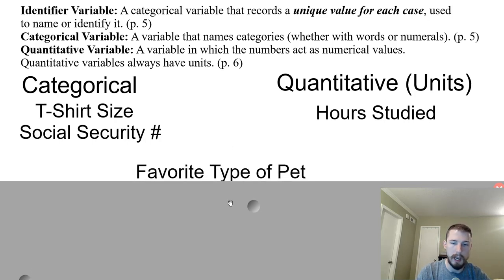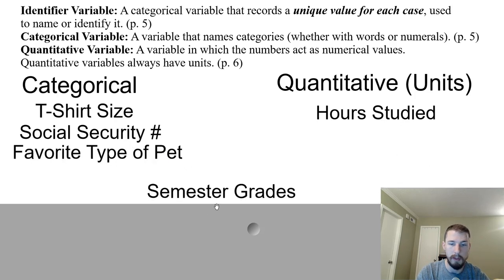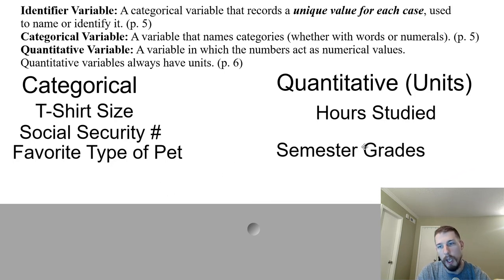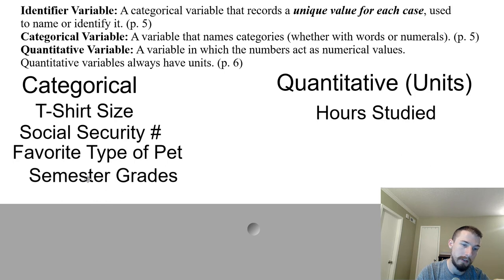Favorite type of pet — cat, dog, fish, turtle — that's obviously categorical; we're breaking those into categories. Semester grades depend on how you look at it: GPA could be quantitative, ranging from 0 to 5.0, since GPA is continuous — 3.1, 3.2, 3.3. But if we're using letter grades like A, B, C, D, or F, then it would be categorical. So semester grades is one that can actually go either way.